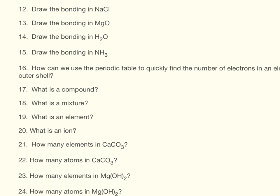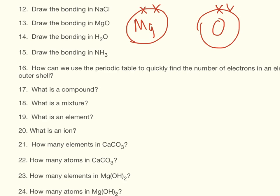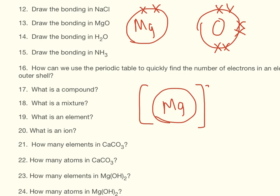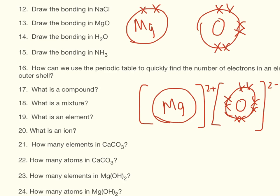For the bonding in magnesium oxide, we have magnesium group 2, so it has two electrons in its outer shell. Oxygen has six electrons in its outer shell. Magnesium loses those two electrons, so it becomes a 2+ charge. Oxygen gains the two electrons, so it has eight electrons in its outer shell and gets the 2- charge.